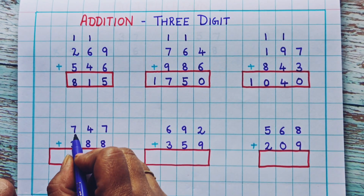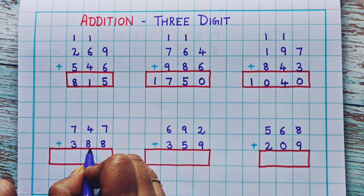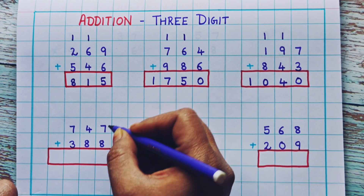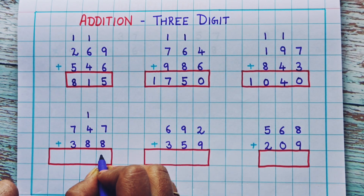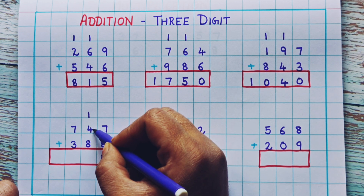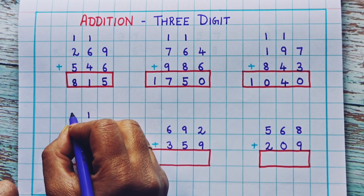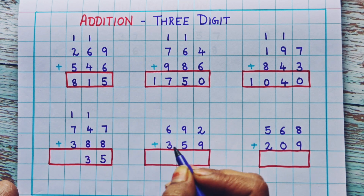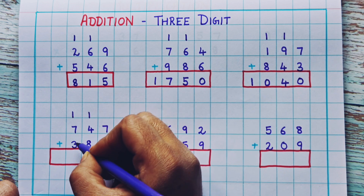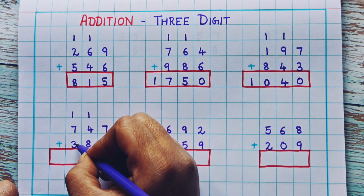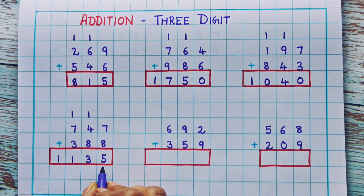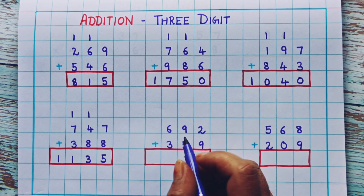Now let's see the next one: 747 plus 388. 7 plus 8 is 15, so 1 I'll write as a carryover and 5 at the bottom. Now 1 plus 4 is 5, 5 plus 8 is 13, so 1 I'll write here and 3 over here. Now 1 plus 7 is 8, 8 plus 3 is 11. I'll write 11 here, so the answer is 1135.